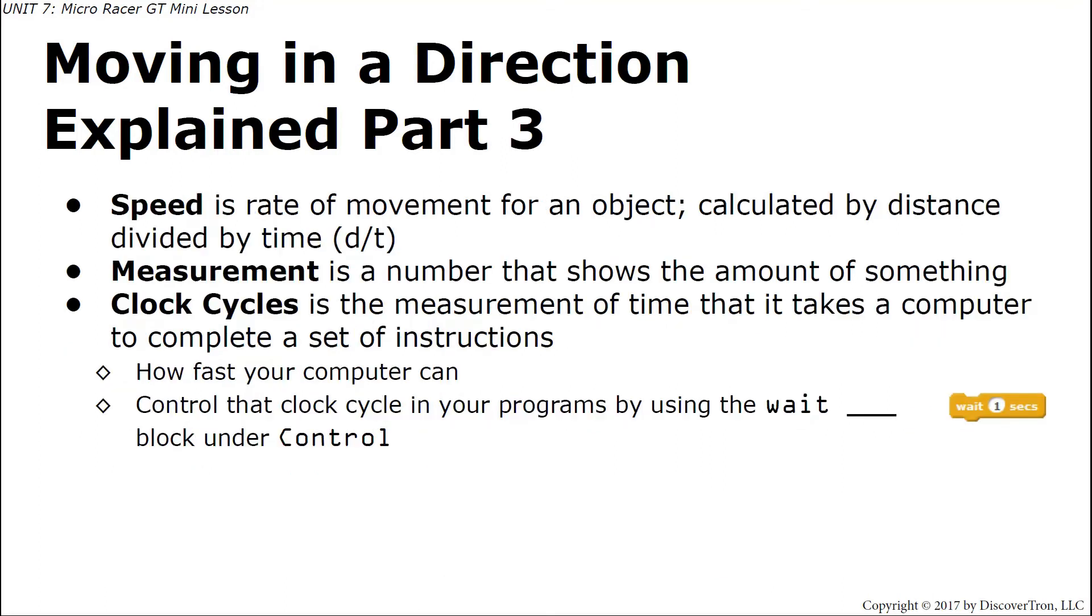For those of you that are new to speed, let's quickly talk about that. Speed is the rate of movement for an object calculated by distance divided by time. So the amount of distance that you move in a particular amount of time will determine your speed, which is your rate of movement. The term measurement, whenever we use that, is talking about a number that shows the amount of something. In our case, the measurement for our objects as they move across the screen is basically how many points it moves across on that XY axis. You could almost say it's a pixel unit as it moves across the screen. That's going to be our measurement, how far it moves at a particular rate across the screen.